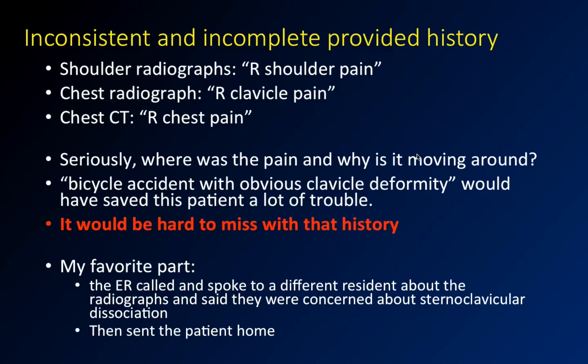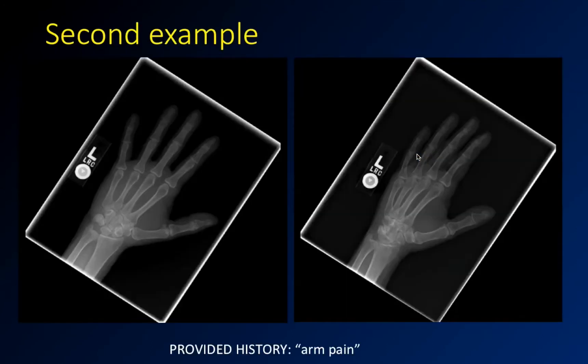The most ridiculous part: the ER called and talked to another resident — not the one reading the study — expressing concern about sternoclavicular dissociation, a dislocation of the medial clavicle. This didn't get conveyed to me. What's worse is they sent the patient home. I have mixed feelings: the ER kind of got what they deserved, but I feel terrible for the patient — he's sitting there with an obvious deformity and they told him he was fine, gave him oxycodone, and sent him home. The staff found it and he came back.